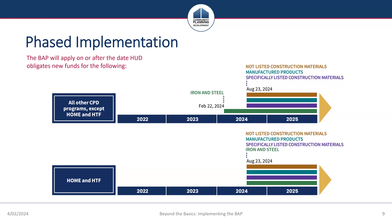HOME and Housing Trust Fund projects will be subject to the BABA for all materials with funds obligated by HUD on or after August 23, 2024. The Buy America Preference will also phase in for iron and steel, construction materials, and manufactured products purchased for most other covered CPD program funds obligated by HUD on or after August 23, 2024. The BABA is fully implemented across all covered CPD programs for all products at the time HUD obligates FY25 appropriations. For more details, please refer to the BABA webinar for HUD CPD grantees recorded on the HUD Exchange.